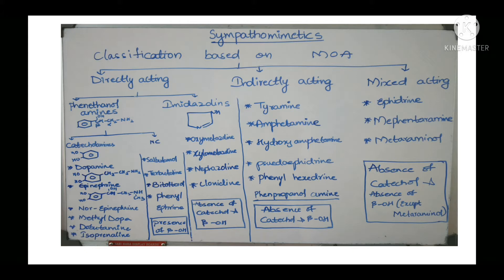Sympathomimetics are also called adrenergic receptor agonists — they mimic the action of norepinephrine. Sympatholytics are adrenergic receptor antagonists; they block the action of agonistic drugs and prevent the agonist from binding to the receptor. First we'll study the classification.